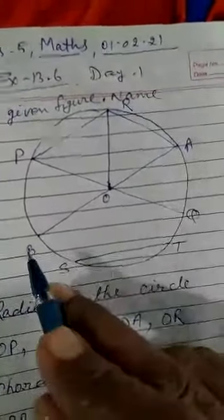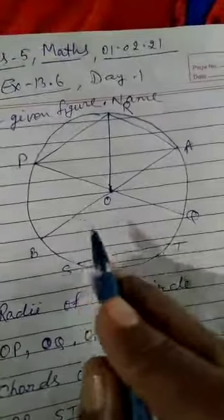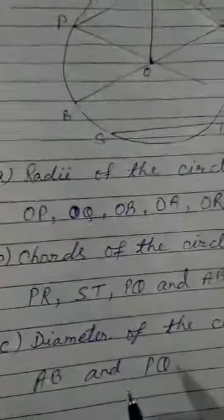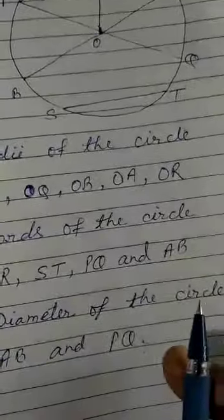So PQ and AB are the diameters of the circle in this figure. So your answer is: AB and PQ are the diameters of the circle.